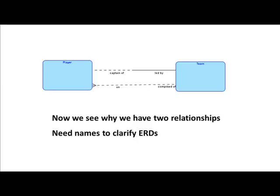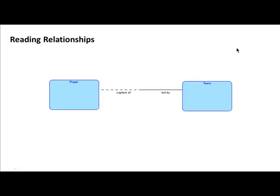Now that we have the idea that relationships can be named to give much more meaning on entity relationship diagrams, let's take a look in slightly greater detail. Let's see how to read a relationship. Given a diagram that has relationships, you can read them in a very mechanical way. A relationship can be read from the left or the right — there are two different ways.